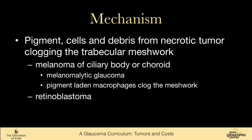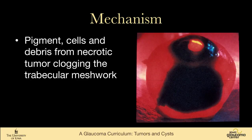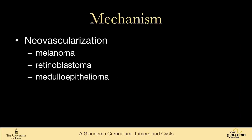One can also have pigment released from the tumor, and cells and debris from a necrotic tumor can clog the trabecular meshwork. When this happens with a melanoma of the ciliary body or choroid, it's called melanolytic glaucoma. Pigment-laden macrophages can also clog the meshwork. Retinoblastoma can shed tumor cells and necrotic debris causing an open-angle form of glaucoma. This large choroidal melanoma is the type big enough to become necrotic and shed cells, though I have to admit I've almost never actually seen a case of melanolytic glaucoma in practice.